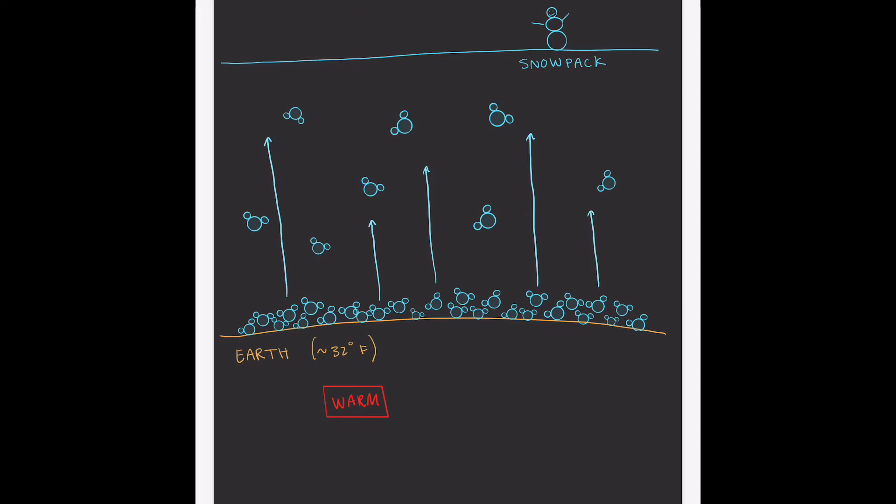On the other hand, if the air temperature is at or above 32 degrees Fahrenheit, you're not going to get that net movement of water vapor up through the snowpack. So just to bring it back, we've addressed the first of the major factors driving the movement of water vapor through the snowpack, which is the ambient air temperature.